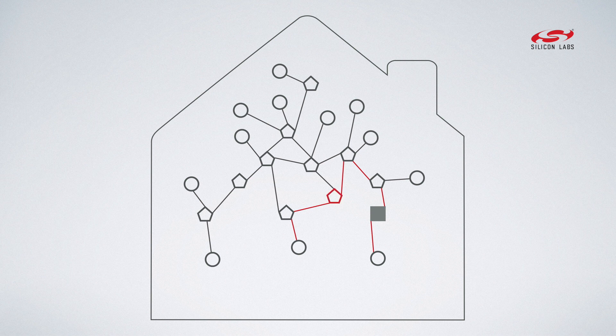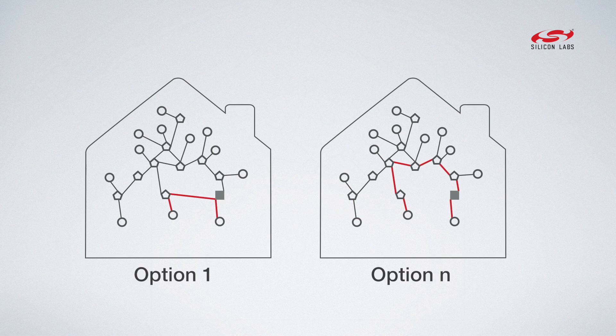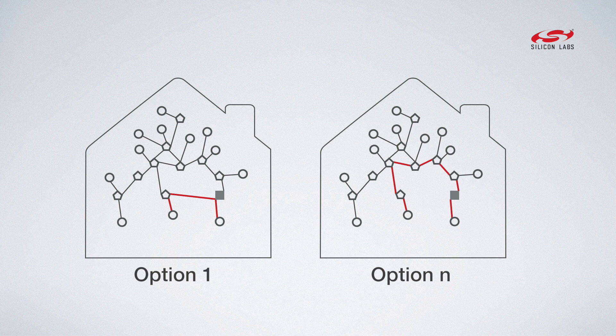When the network changes, the routing information and possibly the set of active routers gets updated automatically. To the application, all of this is invisible—the application just sends and receives messages.